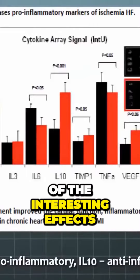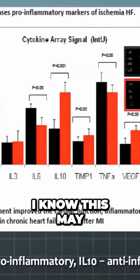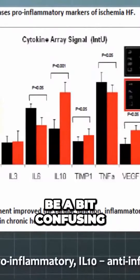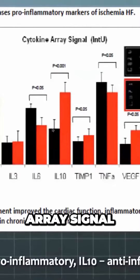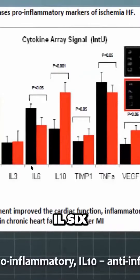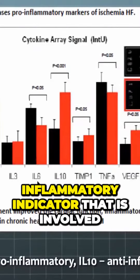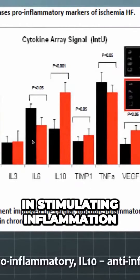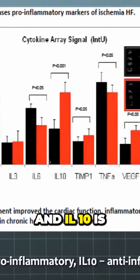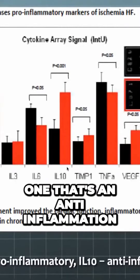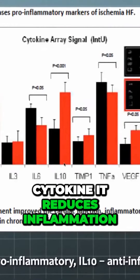One of the interesting effects from this — and I know this may be a bit confusing — is a cytokine array signal. Look particularly at IL-6 and IL-10. IL-6 is the cytokine, an inflammatory indicator involved in stimulating inflammation, and IL-10 is an anti-inflammatory cytokine that reduces inflammation.